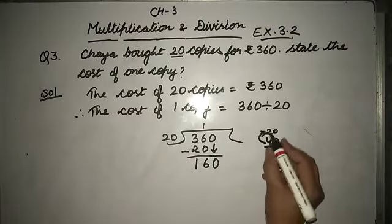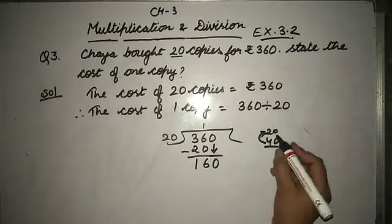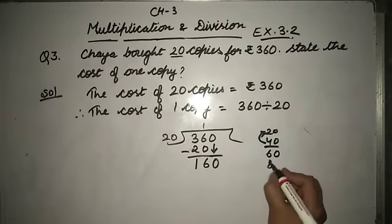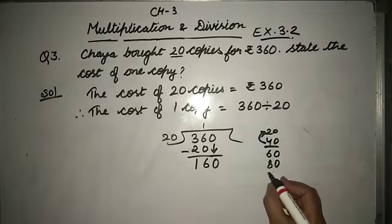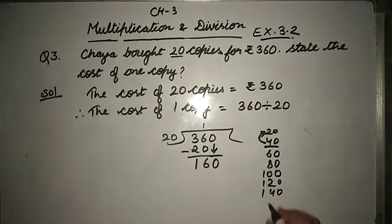Now I am writing again the table of 20: 20×1=20, 20×2=40, 20×3=60, 20×4=80, 20×5=100, 20×6=120, 20×7=140, 20×8=160.